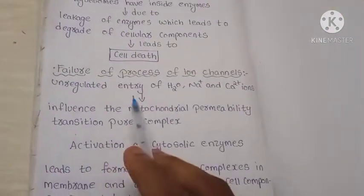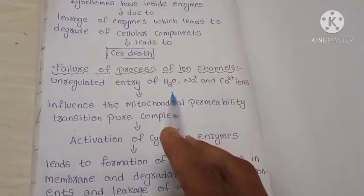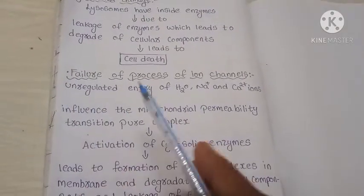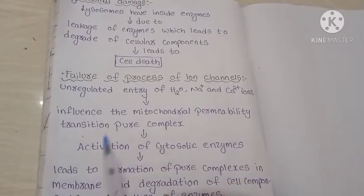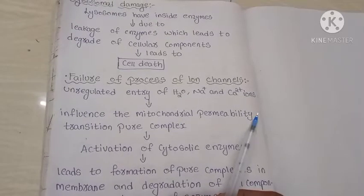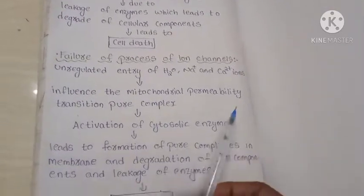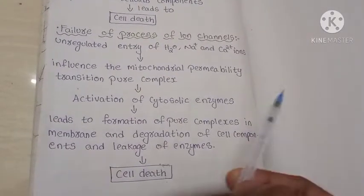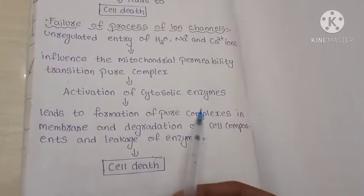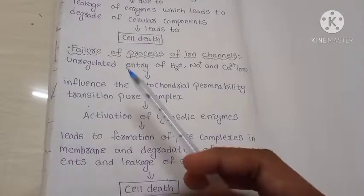Next is the failure of ion channels. Unregulated entry of H₂O, sodium, and calcium ions influences the mitochondrial permeability transition pore complex. This activates cytosolic enzymes, leading to the formation of a pore complex in the membrane, degradation of cellular components, and leakage of enzymes, which leads to cell death.